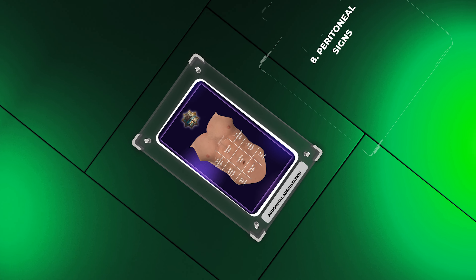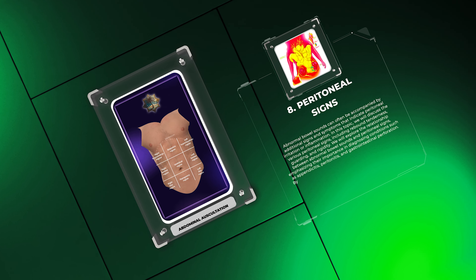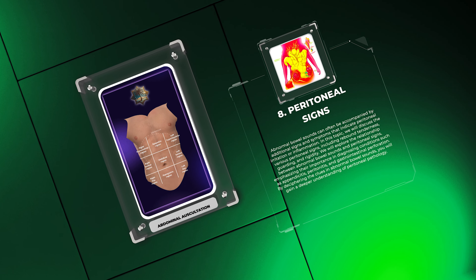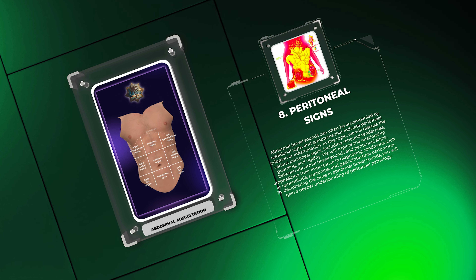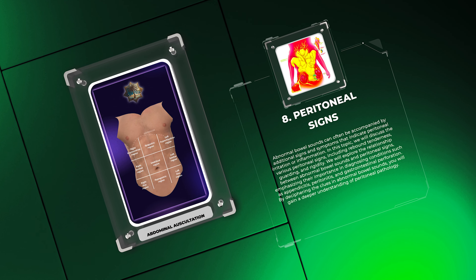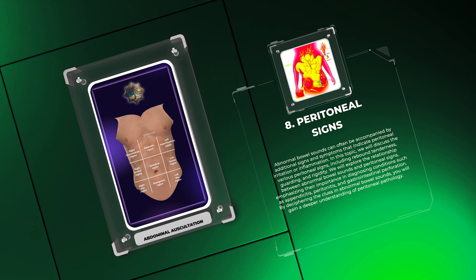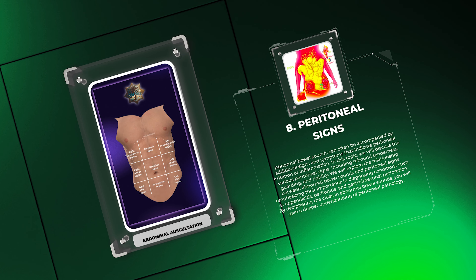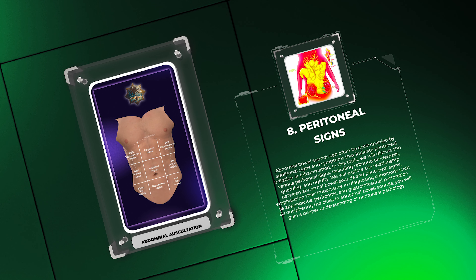Abnormal bowel sounds can often be accompanied by additional signs and symptoms that indicate peritoneal irritation or inflammation. In this topic, we will discuss the various peritoneal signs, including rebound tenderness, guarding, and rigidity.